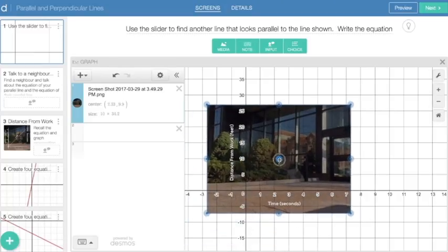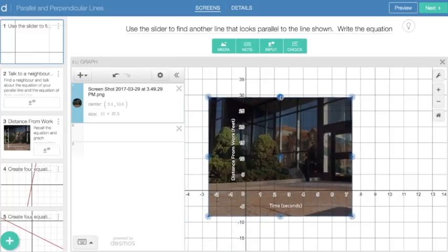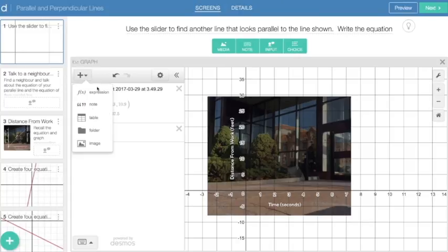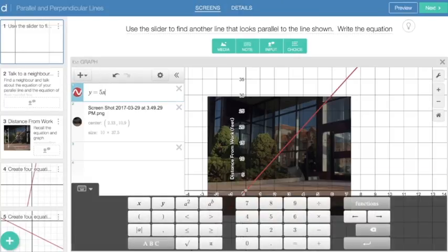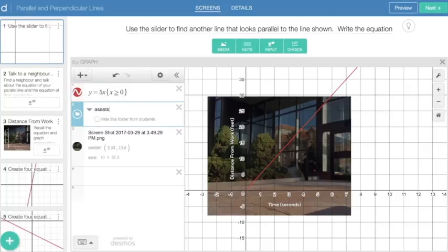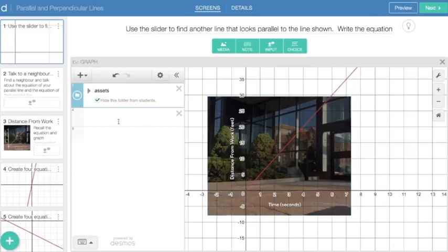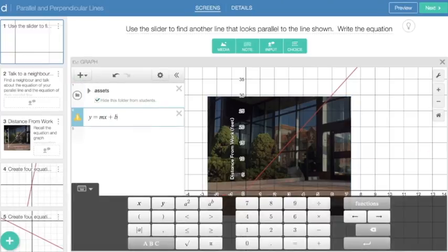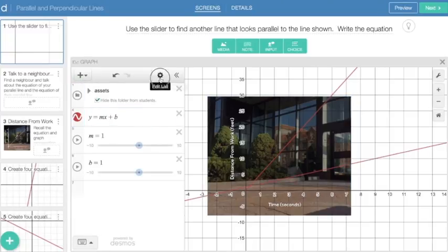For example, if I were to add a new slide to Activity Builder, add a screenshot of the scene from the video, and include a Desmos-generated graph overlay on the screenshot, as well as some sliders for the general equation for slope-y-intercept form of a line, students can explore to find other equations of lines that look to be parallel and compare with their peers.